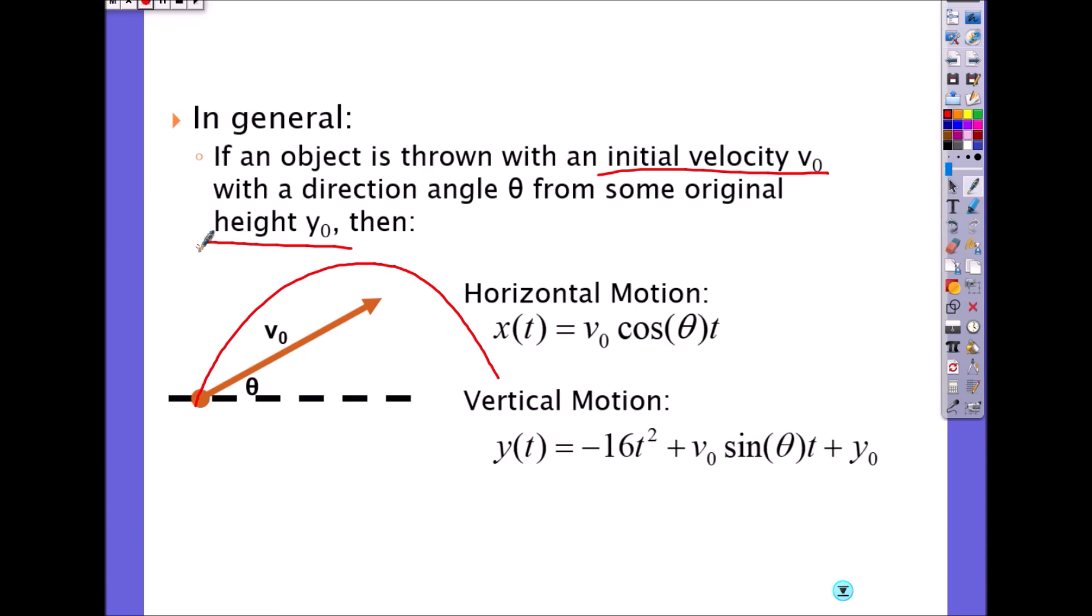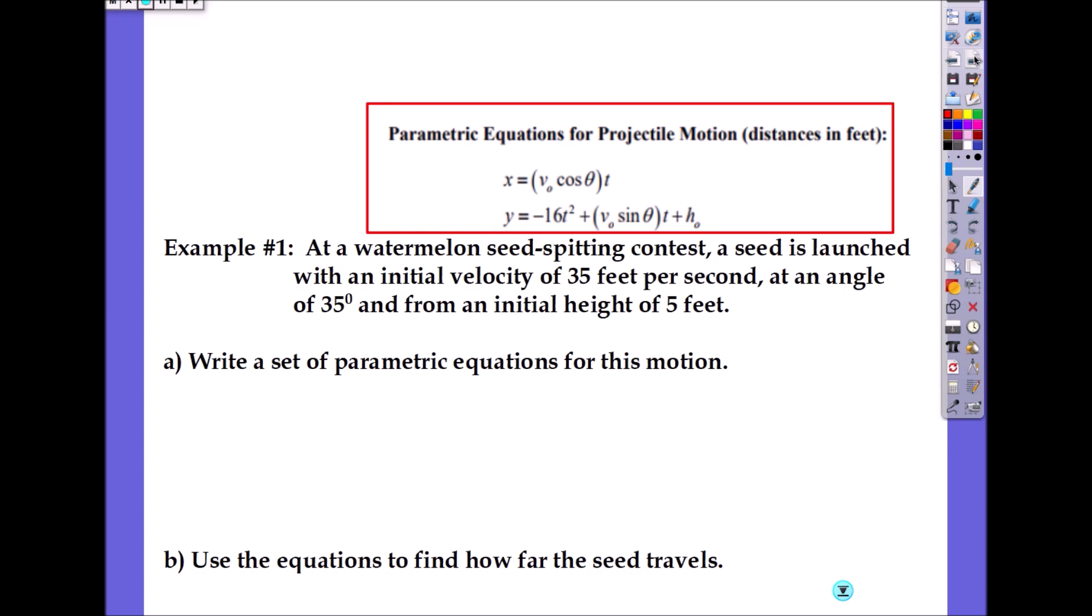Let's look at Example #1: At a watermelon seed spitting contest, a seed is launched with an initial velocity of 35 feet per second at an angle of 35 degrees from an initial height of five feet. Write an equation, so you write x and y separately. X(t)...